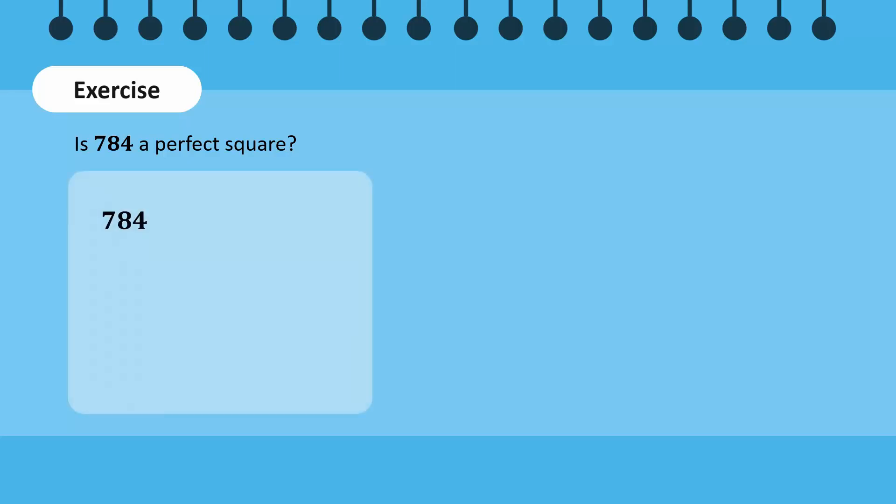The prime factors of 784 are 2, 2, 2, 2, 7, and 7. Grouping similar factors into pairs, we can see that every factor is part of a pair. Hence, 784 is a perfect square.